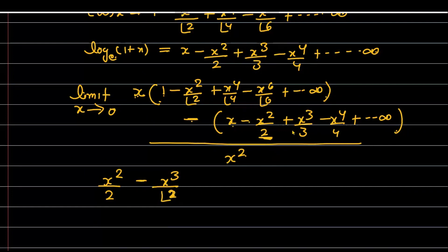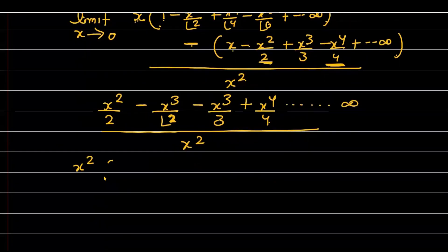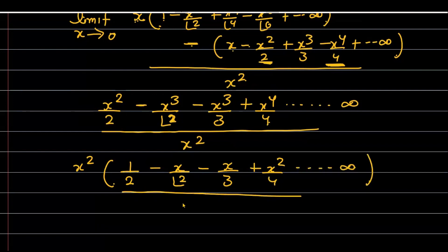There is a cube term here as well: minus x³/3. Then we check the power-4 terms: one power-4 term gives x⁴/4. Higher-order terms also appear but I don't need them — I'll explain why shortly. The denominator is x². Now, from the numerator you can factor out x²: what remains inside is 1/2 − x/2! − x/3 + x²/4 + … up to infinity, all divided by x².